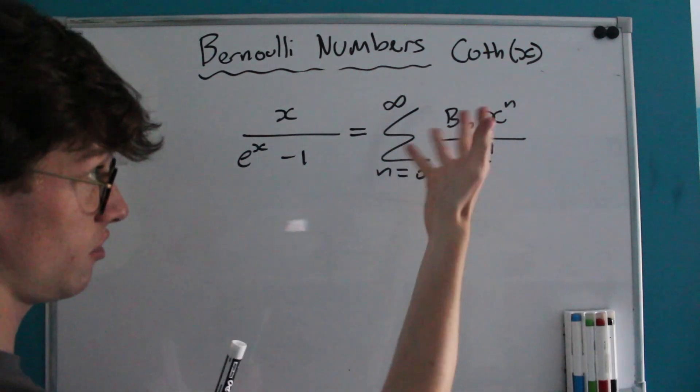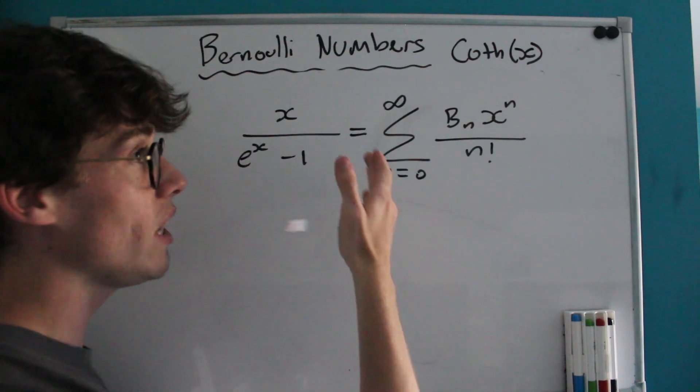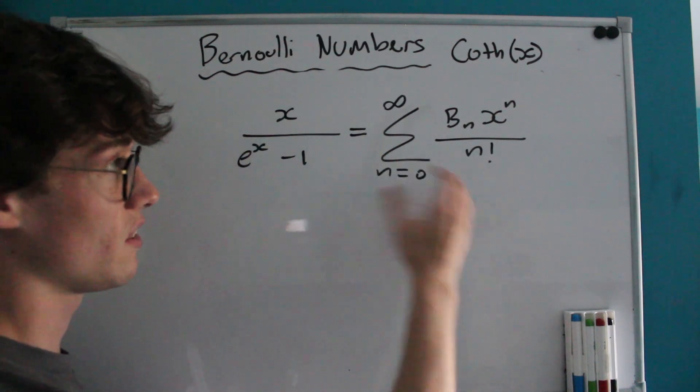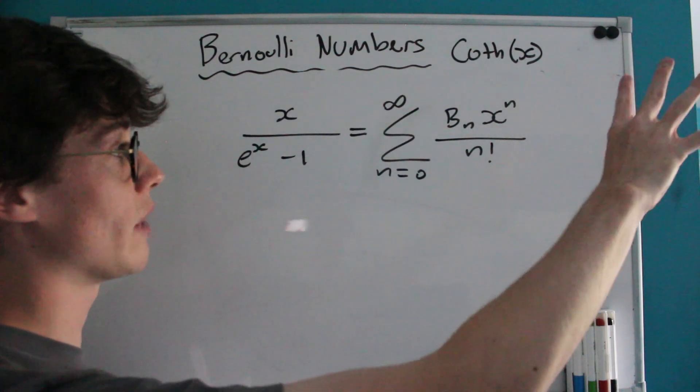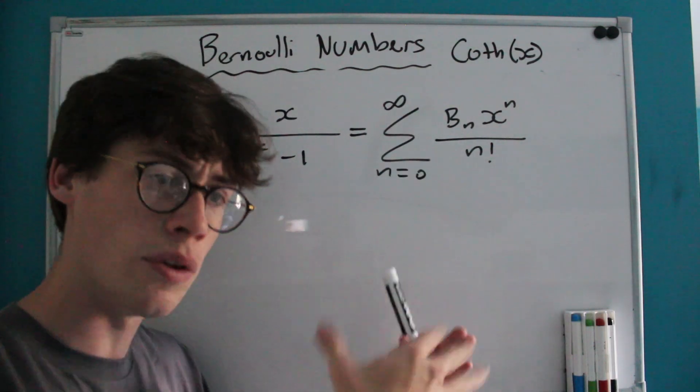The way we do that is by using a neat trick. We consider the McLaren series for all of the Bernoulli numbers. If the only odd power of X that exists in this entire McLaren series is just when n equals 1, when we have X...